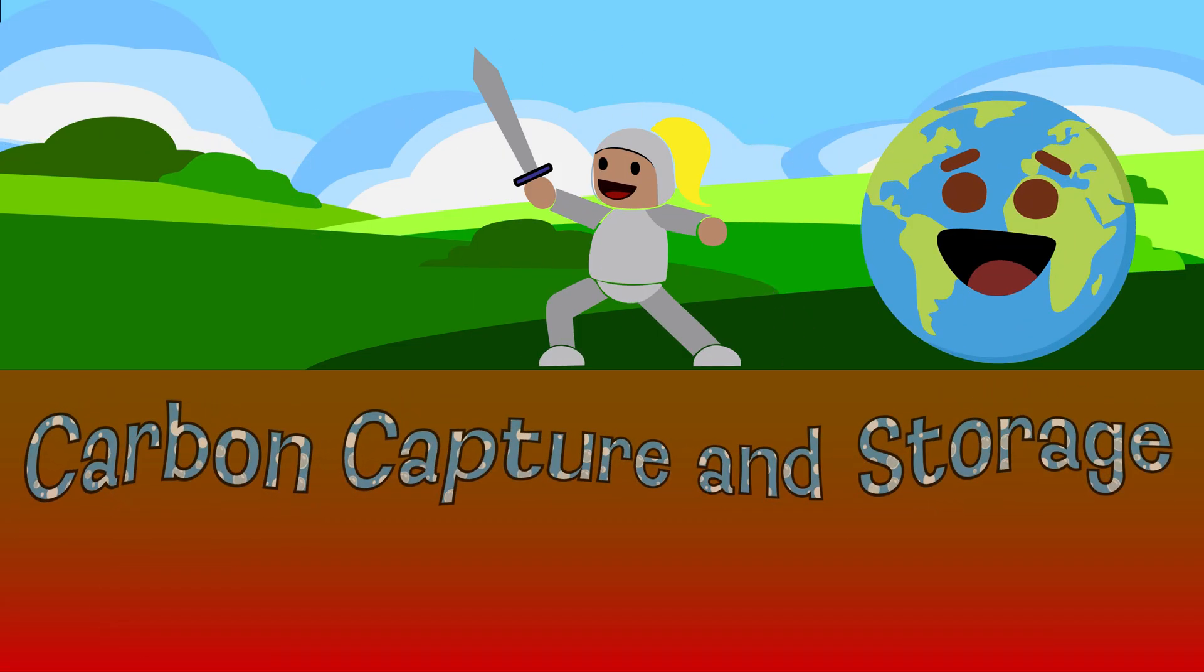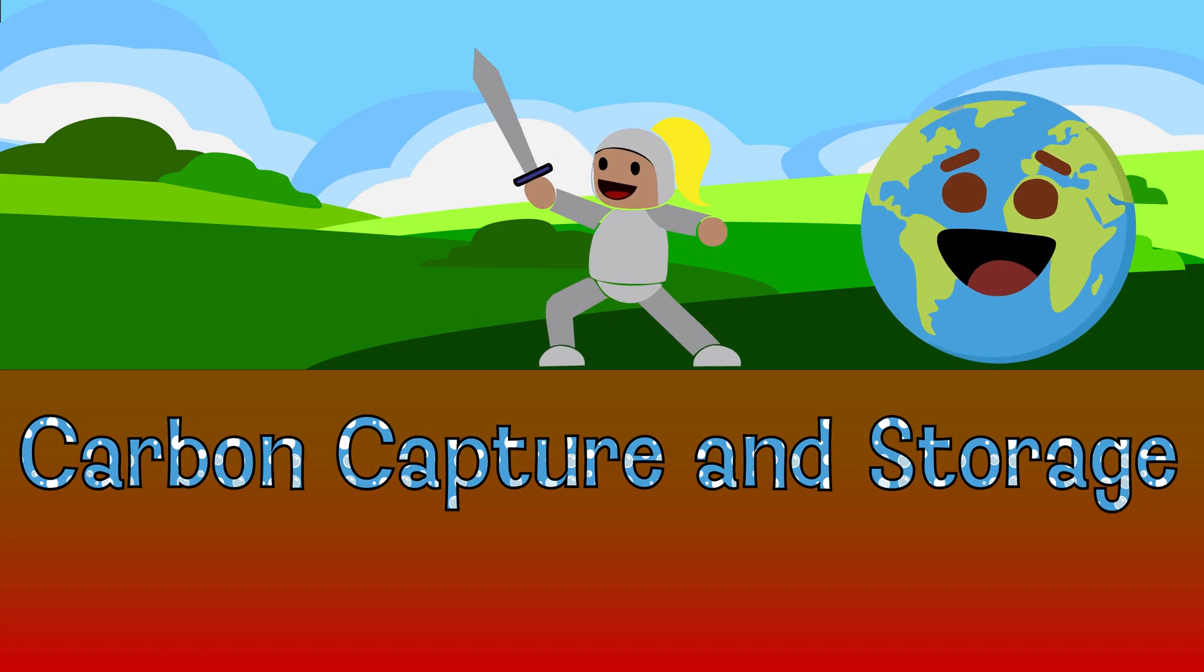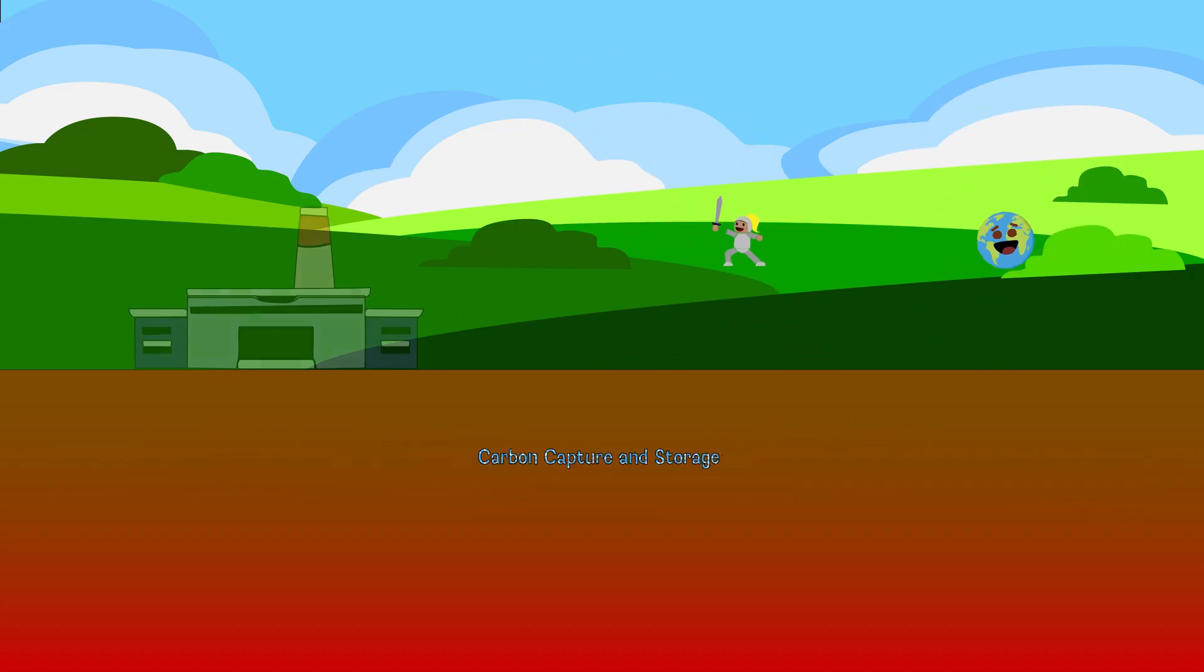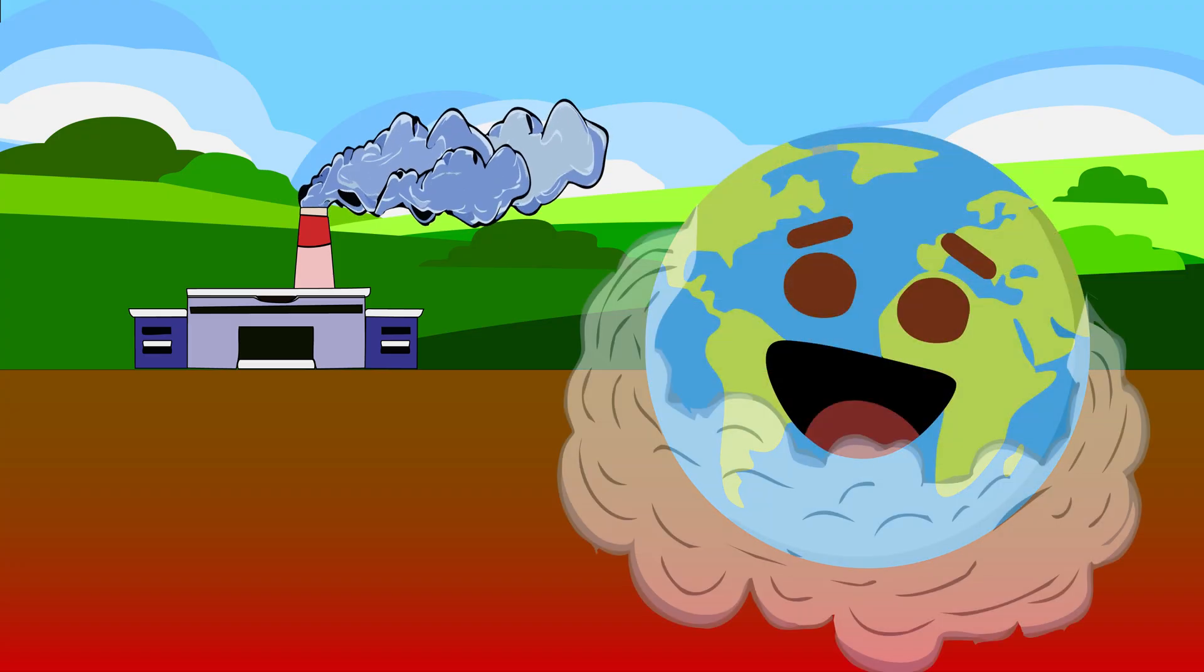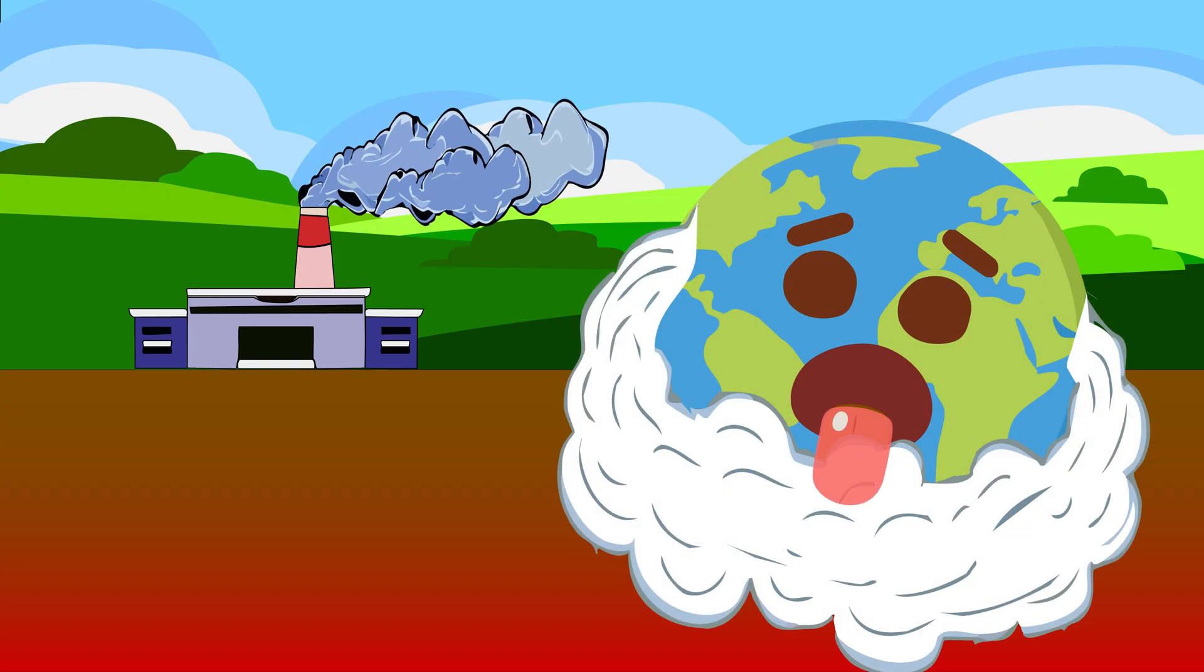Carbon capture and storage is actually a way to help protect the planet while we transition to cleaner sources of energy. When we burn fossil fuels, it releases carbon dioxide, or CO2, into the atmosphere. CO2 is a greenhouse gas that traps heat, like wrapping the Earth in a thick blanket, making the planet warmer over time.